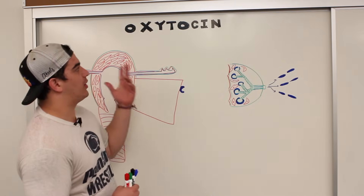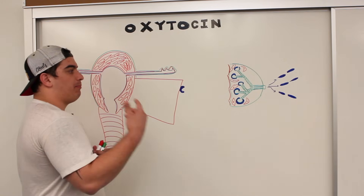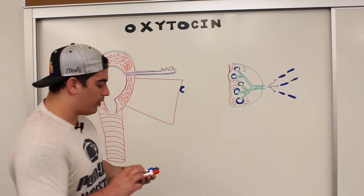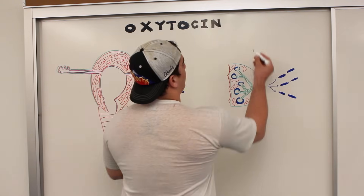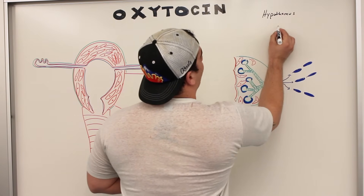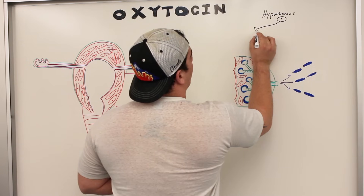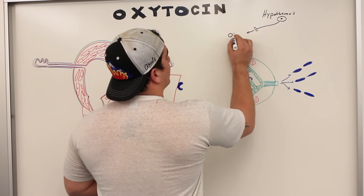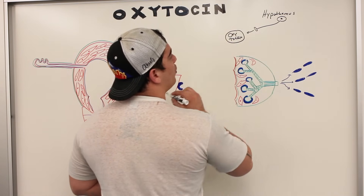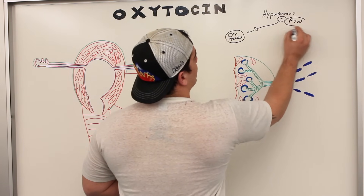Alright Ninja Nerds, today in this video we're going to talk about oxytocin. Oxytocin was actually produced by the posterior pituitary gland. If we look into the hypothalamus, we remember that the hypothalamus has specific neurons releasing oxytocin. The nucleus that was secreting this was the paraventricular nucleus.